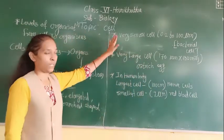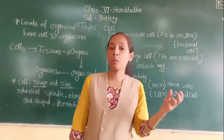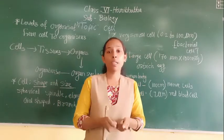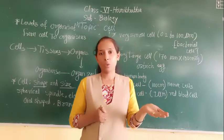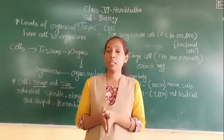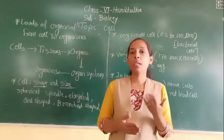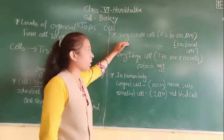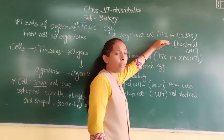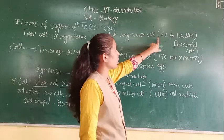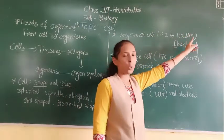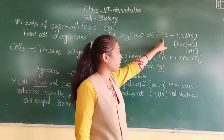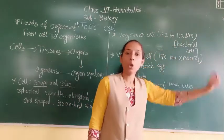Now we will talk about the size of cells. The cell is a microscopic substance; to observe cells we use a microscope, and to observe cell organelles inside the cell we use an electron microscope. The very small cells measure about 0.2 to 100 micrometres — for example, many bacteria cells fall within this range of 0.2 to 100 micrometres.